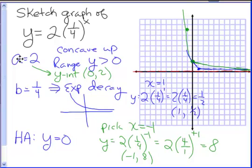This is exponential decay. You can see the similarities with exponential growth, except with b being a fraction, the graph goes down instead of up. I hope this helps.